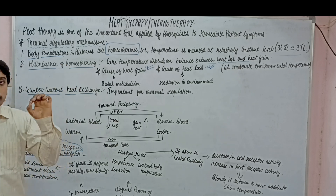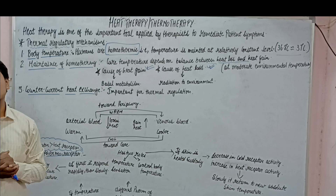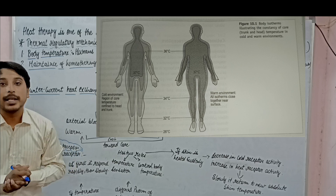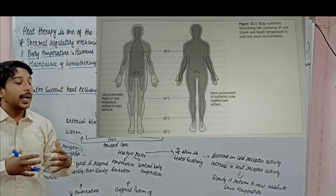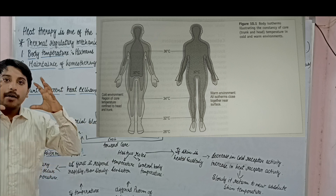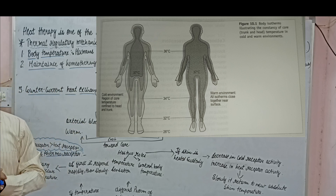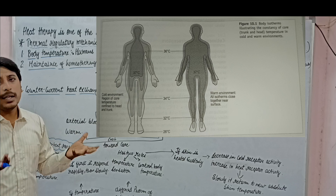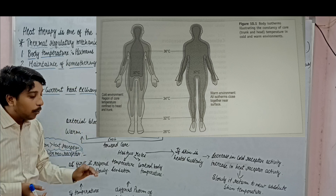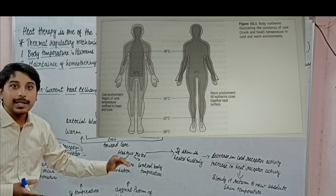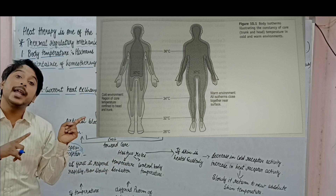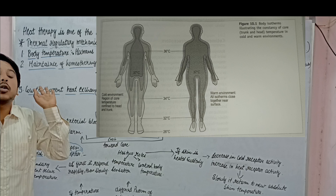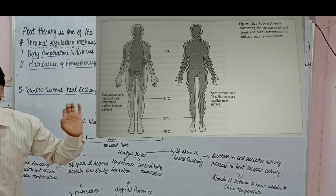Another important thing I want you to understand is this image on your screen, which is the representation of body isotherm lines. What are isotherm lines? These are imaginary lines on the body which represent the heat maintenance of our body. At the core, you can see the temperature is maintained at a nearly constant level of about 37 degree Celsius. And as you move toward the legs, there is a slight drop in temperature. The core temperature is maintained at 37 degree Celsius, possibly at the cost of peripheral body parts.